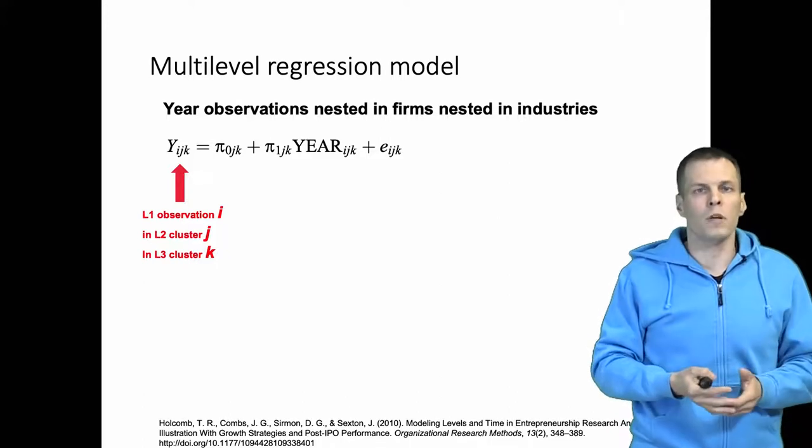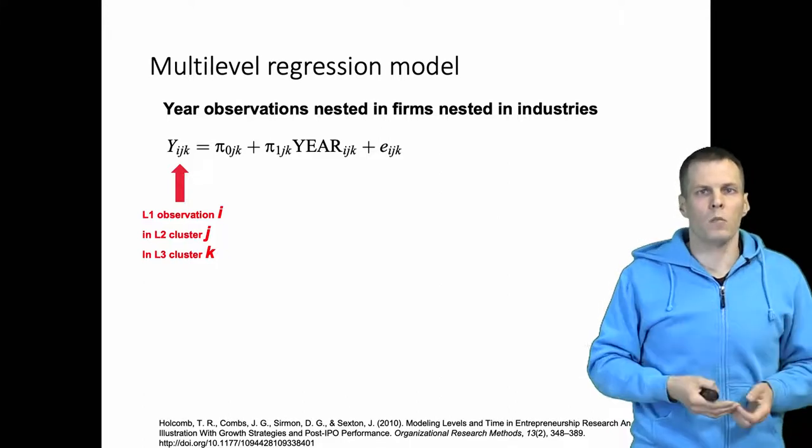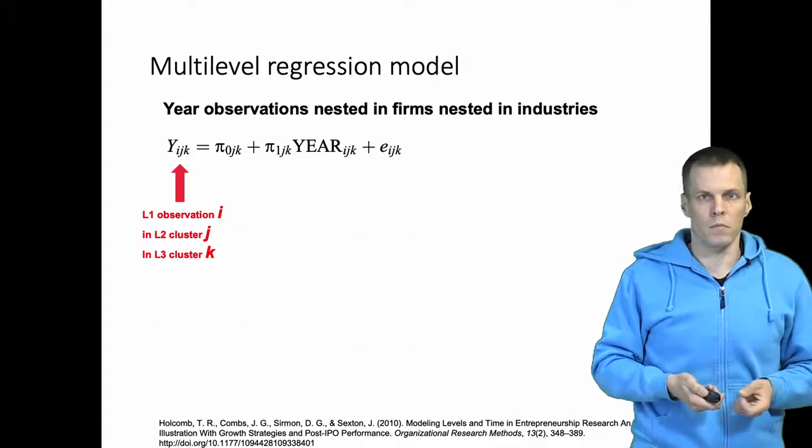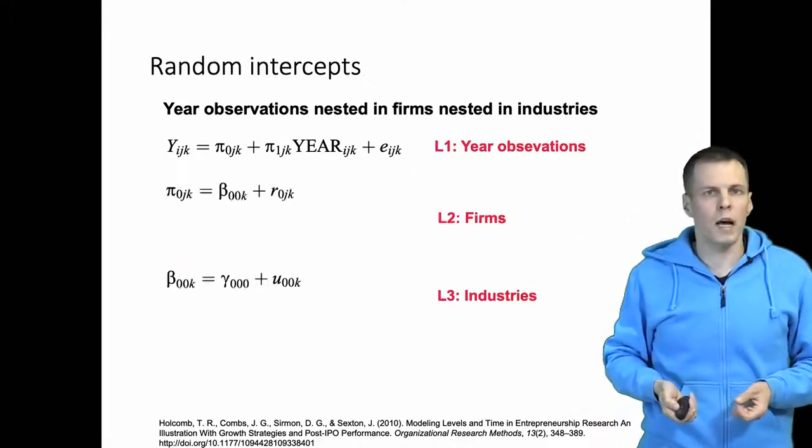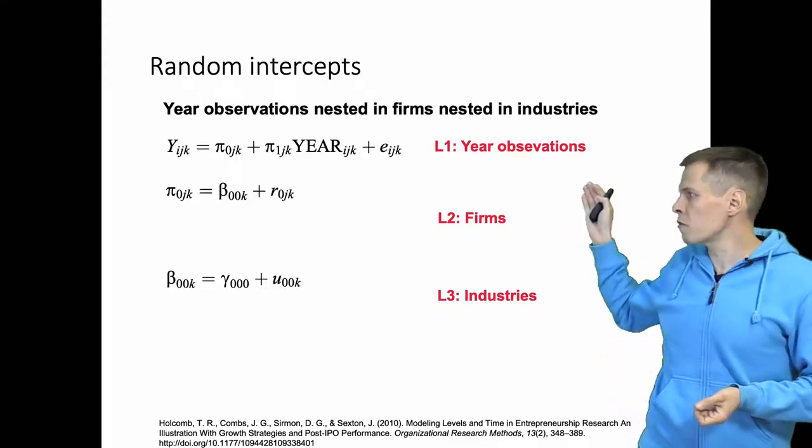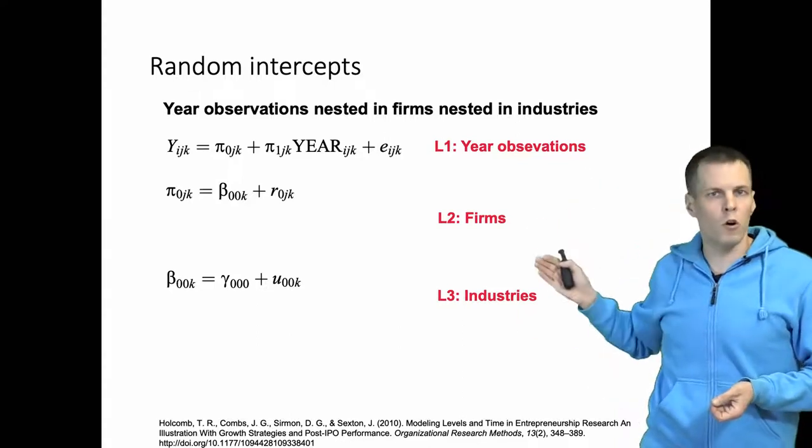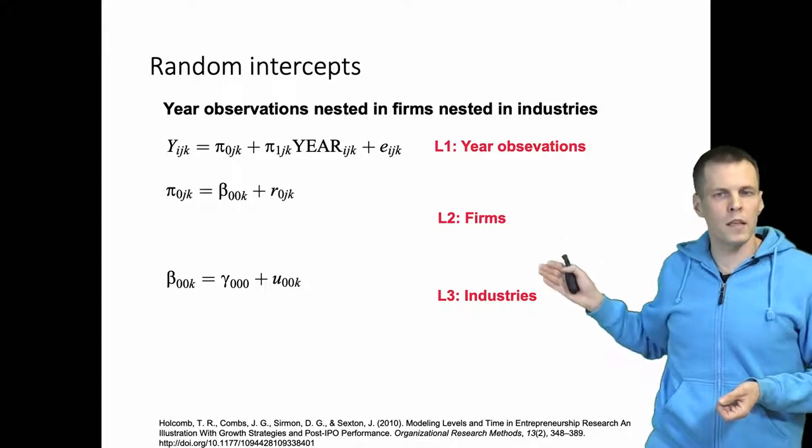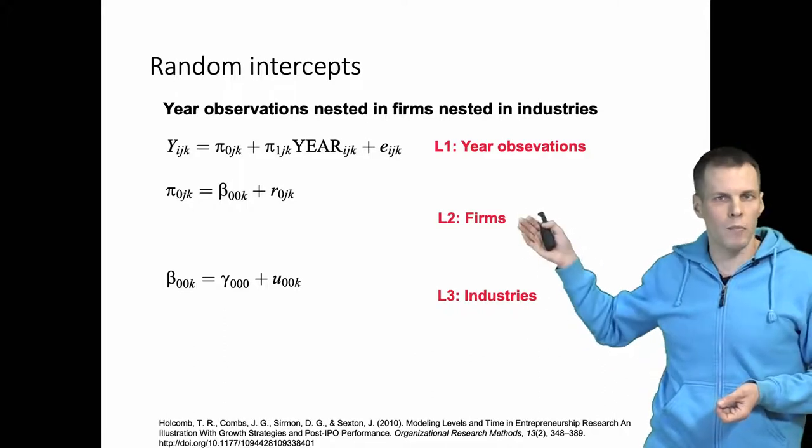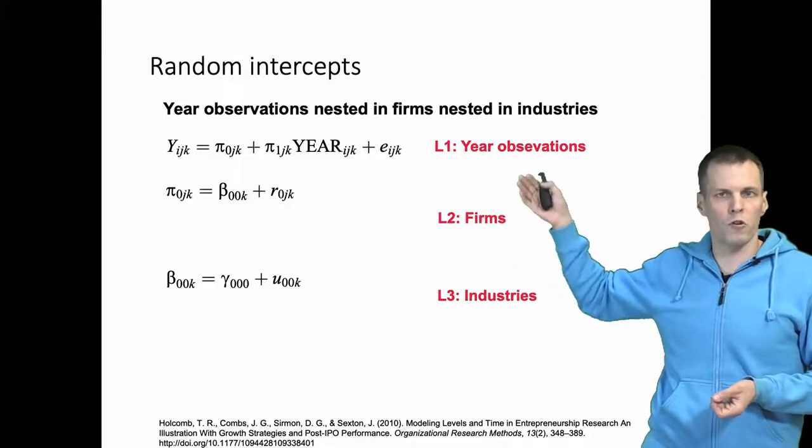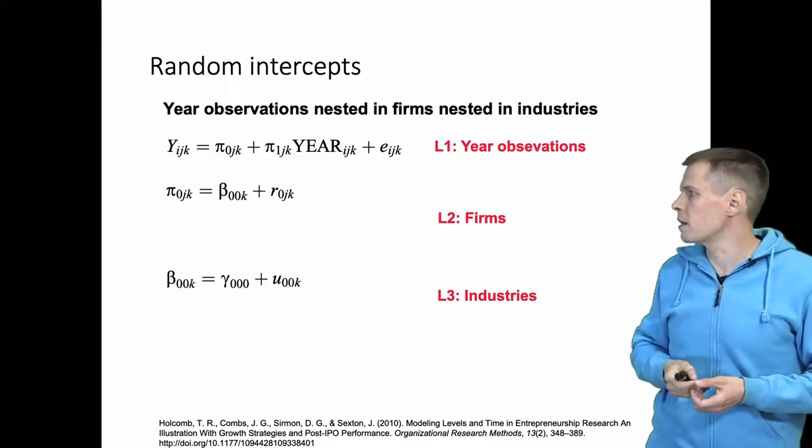For now we're just going to be looking at their first model which is simply a random intercept model. So this is a multilevel model because they actually have three levels of data. They have the year observations, repeated observations of different companies that each belong to one industry. So they have different industries, each have multiple companies, each company is observed multiple times. So this is a nested multilevel model.